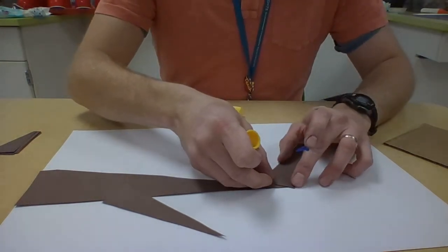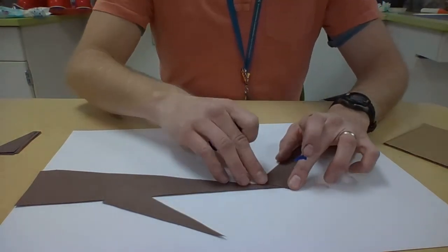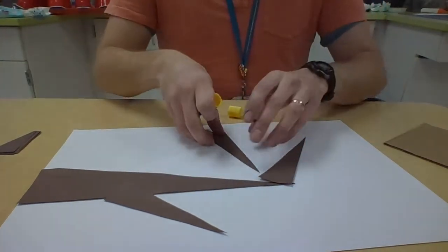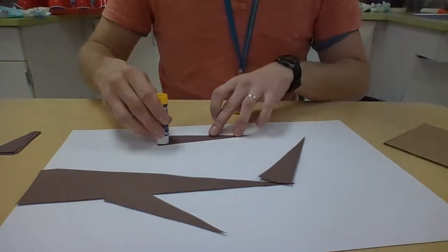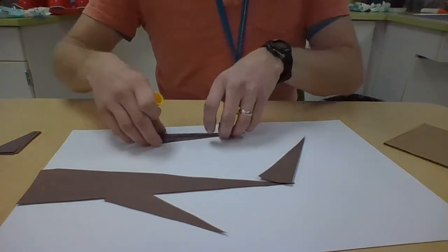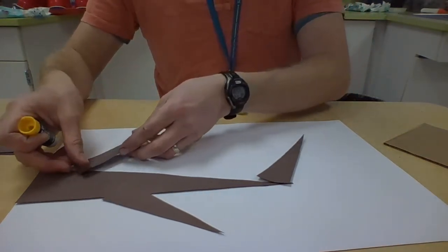I'm even going to put one down here and make my branch look like it kind of bends a little bit. I'm going to put one back here.